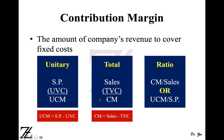You can jump back and forth from unitary to total. If you multiply the unit contribution margin (UCM) by the number of units, you get the total contribution margin, without needing to calculate sales minus total variable cost directly. Alternatively, you can jump from total to unitary by dividing your total contribution margin by selling price to get unit contribution margin.